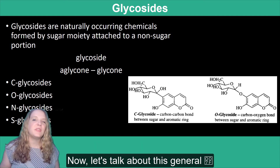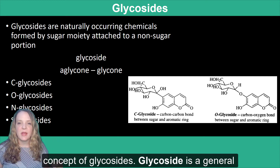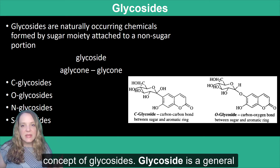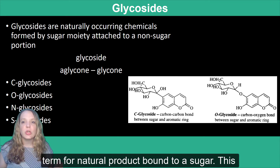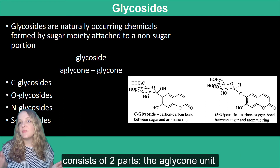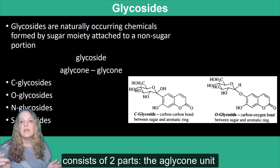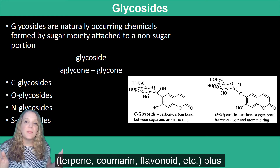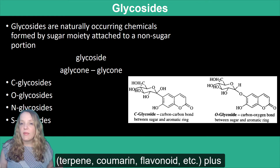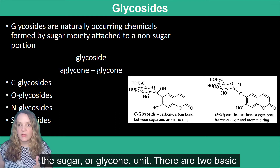Now let's talk about this general concept of glycosides. A glycoside is a general term for a natural product that is bound to a sugar. This consists of two parts: the aglycone unit — which could be something like a terpene, a coumarin, a flavonoid, or so on — plus the sugar, or the glycone unit.